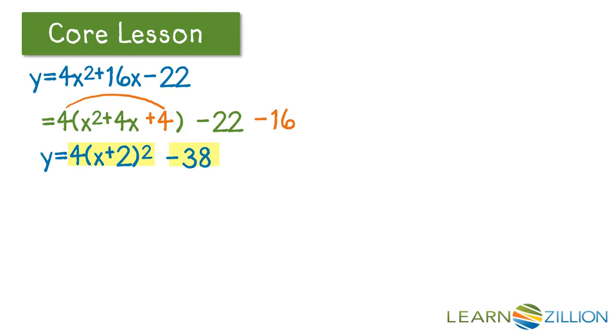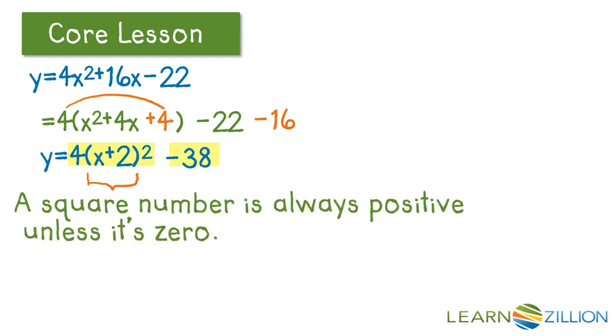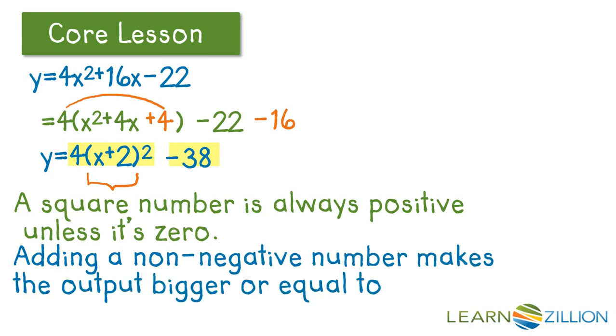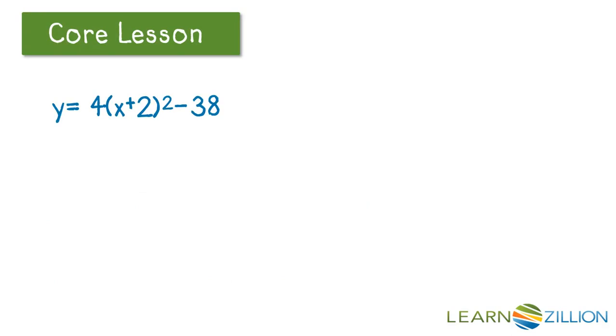So we now have two terms. Now, this part of our first term is a squared number, and a squared number is always positive unless it's zero, which means any positive number I add to negative 38 will make negative 38 larger. If I add zero to negative 38, my y value is going to be negative 38. So, adding a non-negative number makes the output bigger or equal to negative 38.